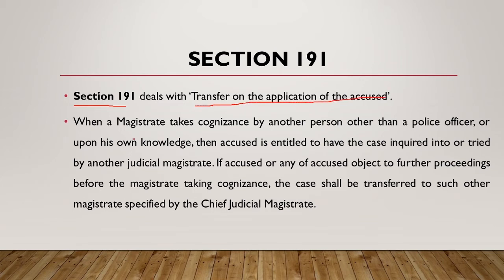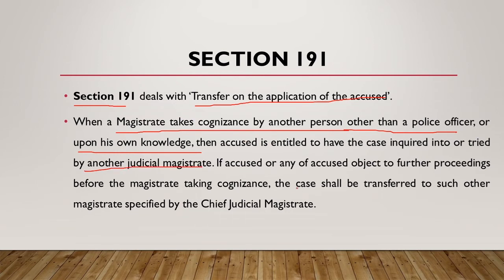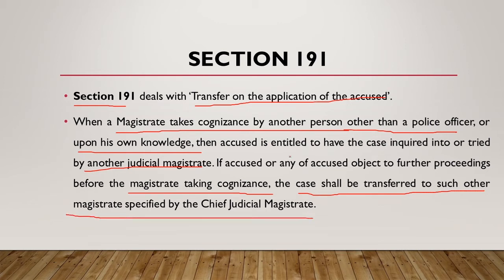Moving to Section 191, it deals with transfer on the application of the accused. When a magistrate takes cognizance through a person other than a police officer or upon his own knowledge, the accused is entitled to have the case inquired into or tried by another judicial magistrate. If the accused objects to further proceedings before that magistrate, prior to cognizance being taken, the case shall be transferred to such other magistrate as specified by the CJM.